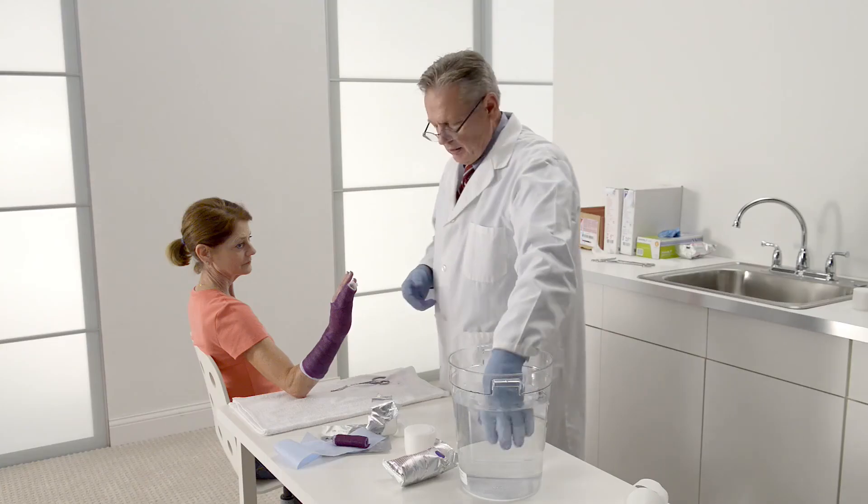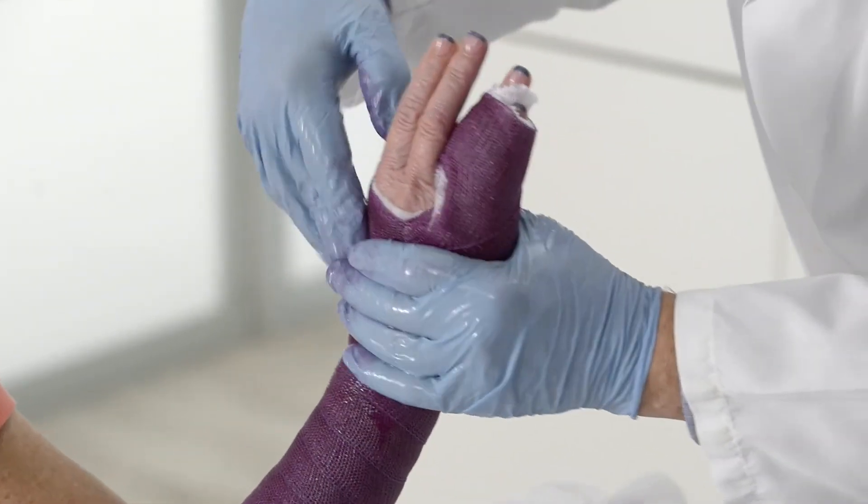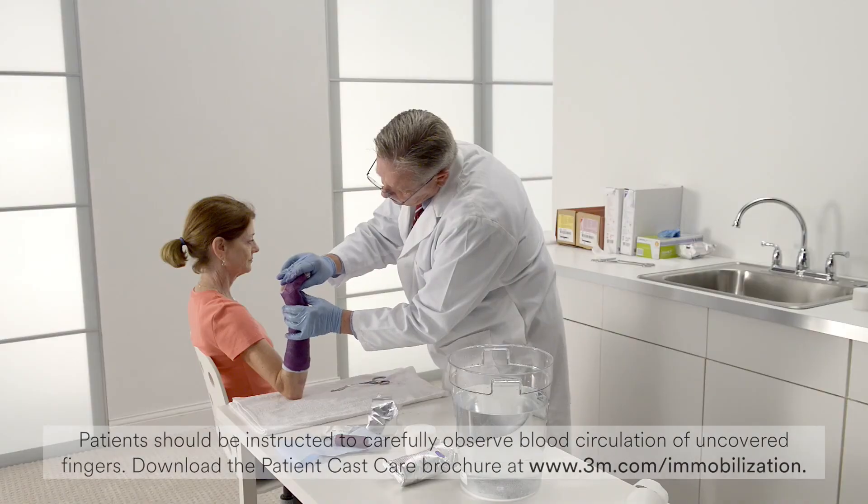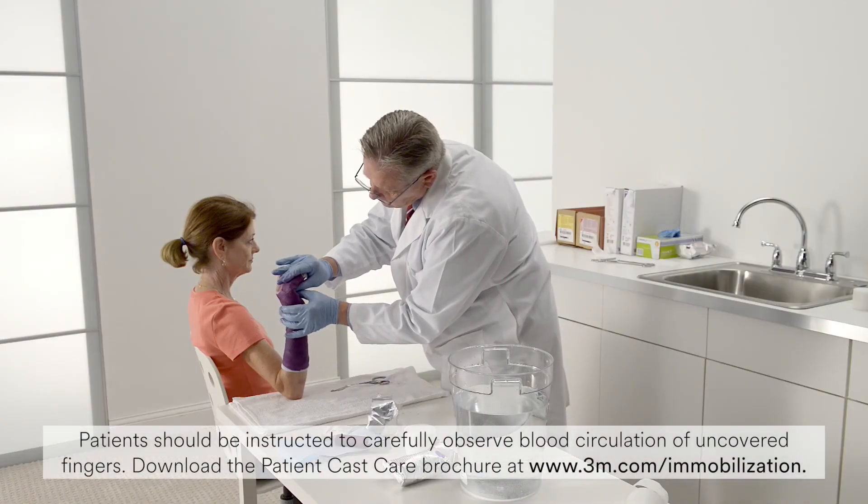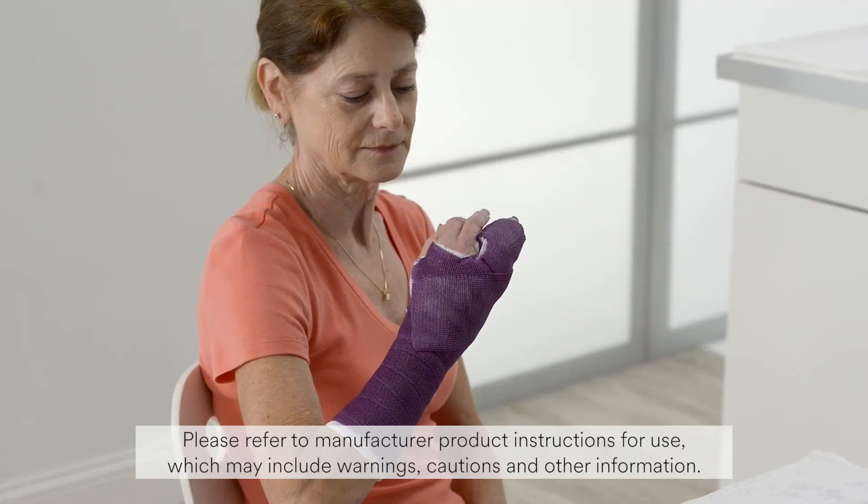Dip your hands in water and mold the cast by placing the flats of your hands on the forearm and apply gentle pressure to achieve the correct mold. The cast will set within three to five minutes and will be fully cured within 20 minutes.